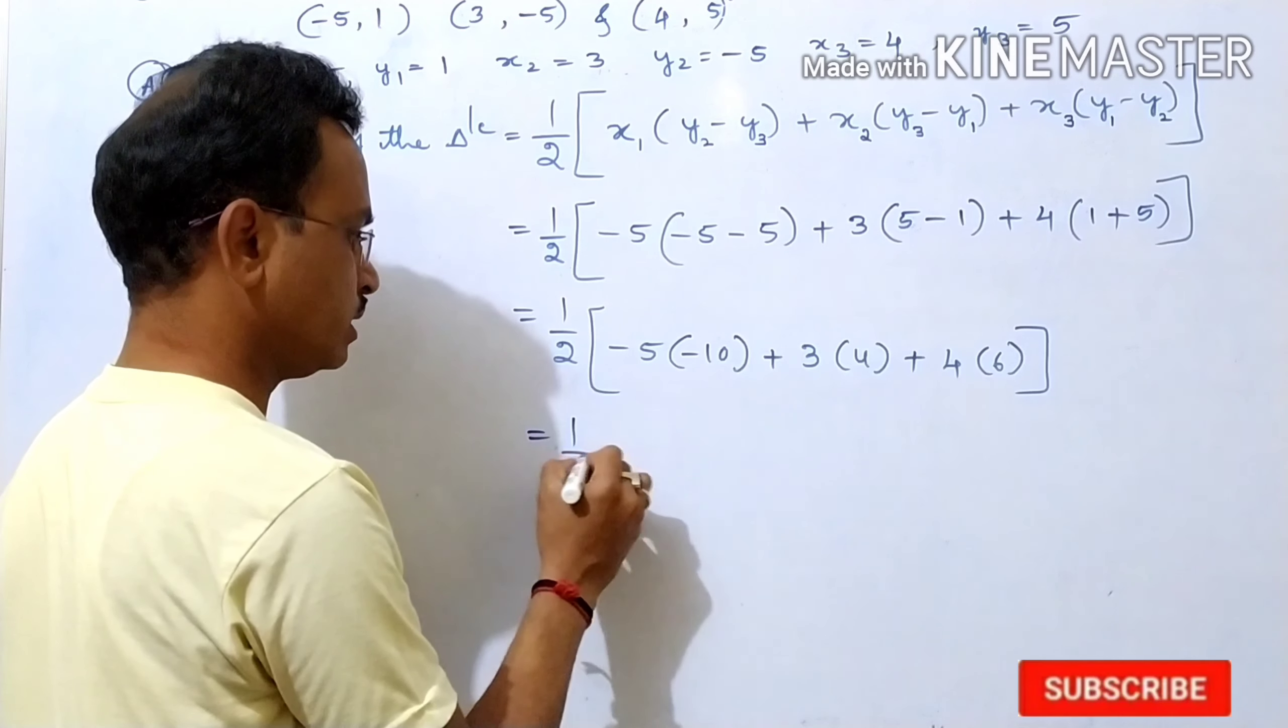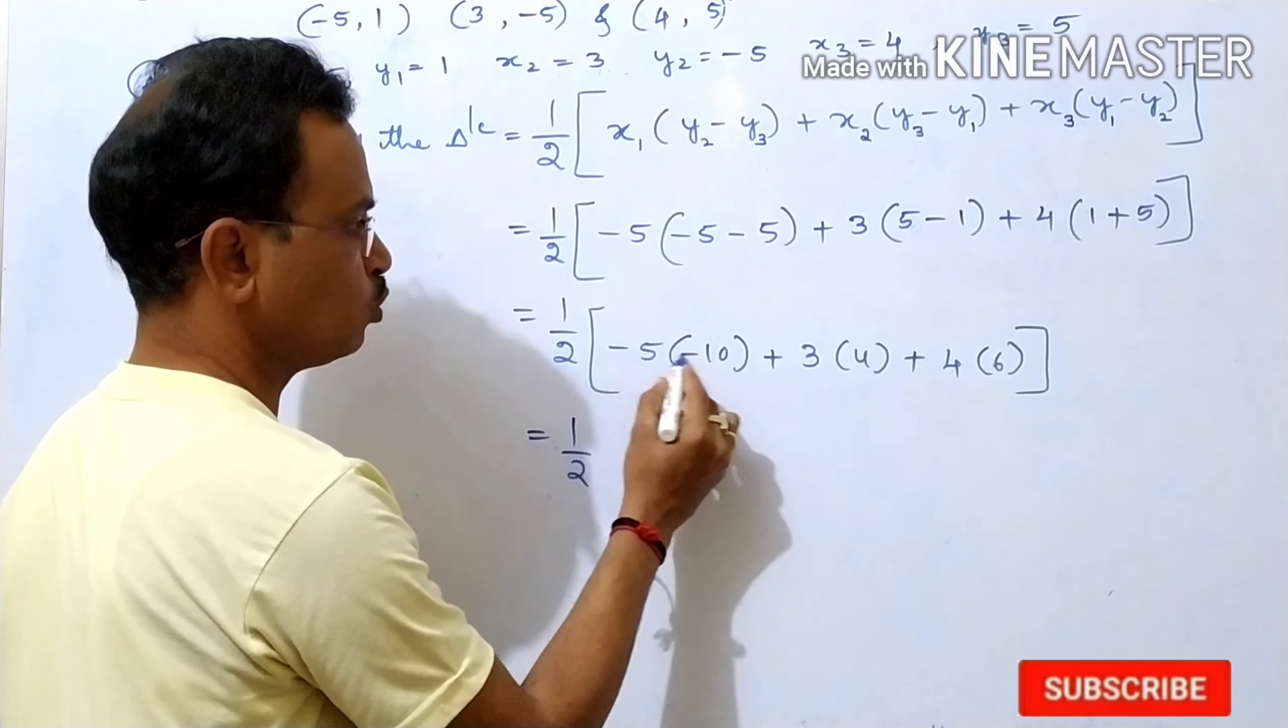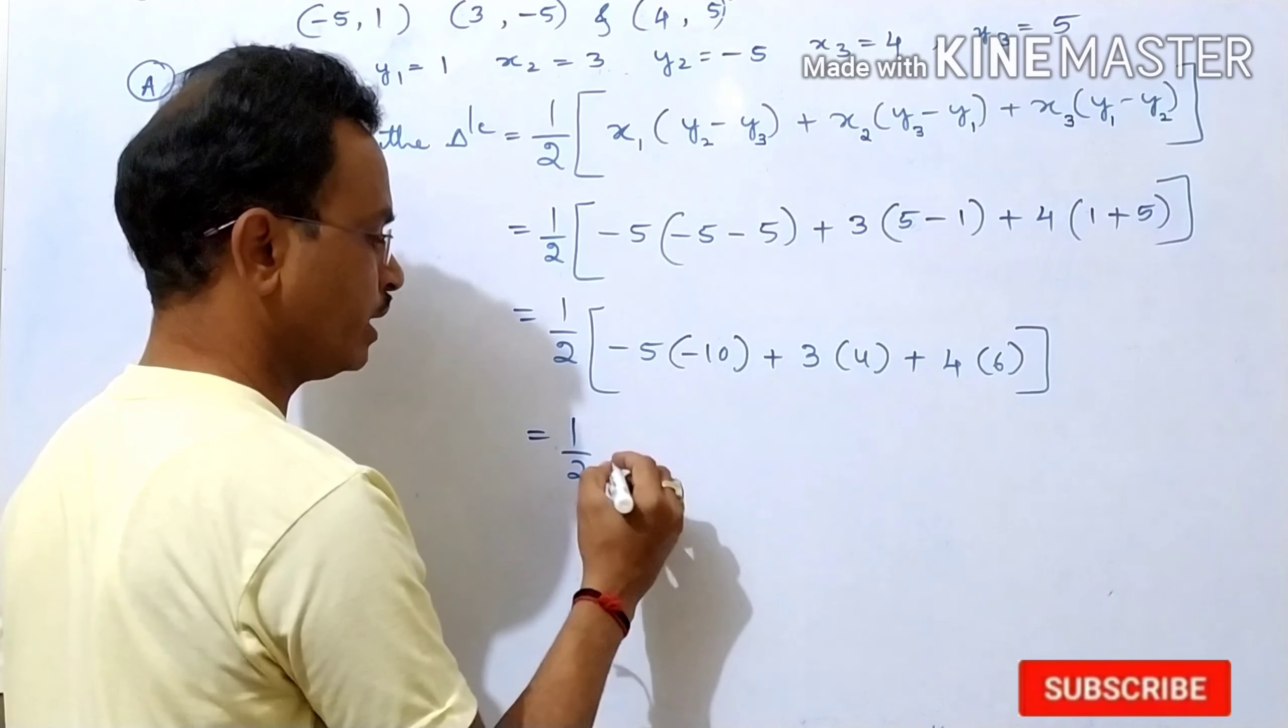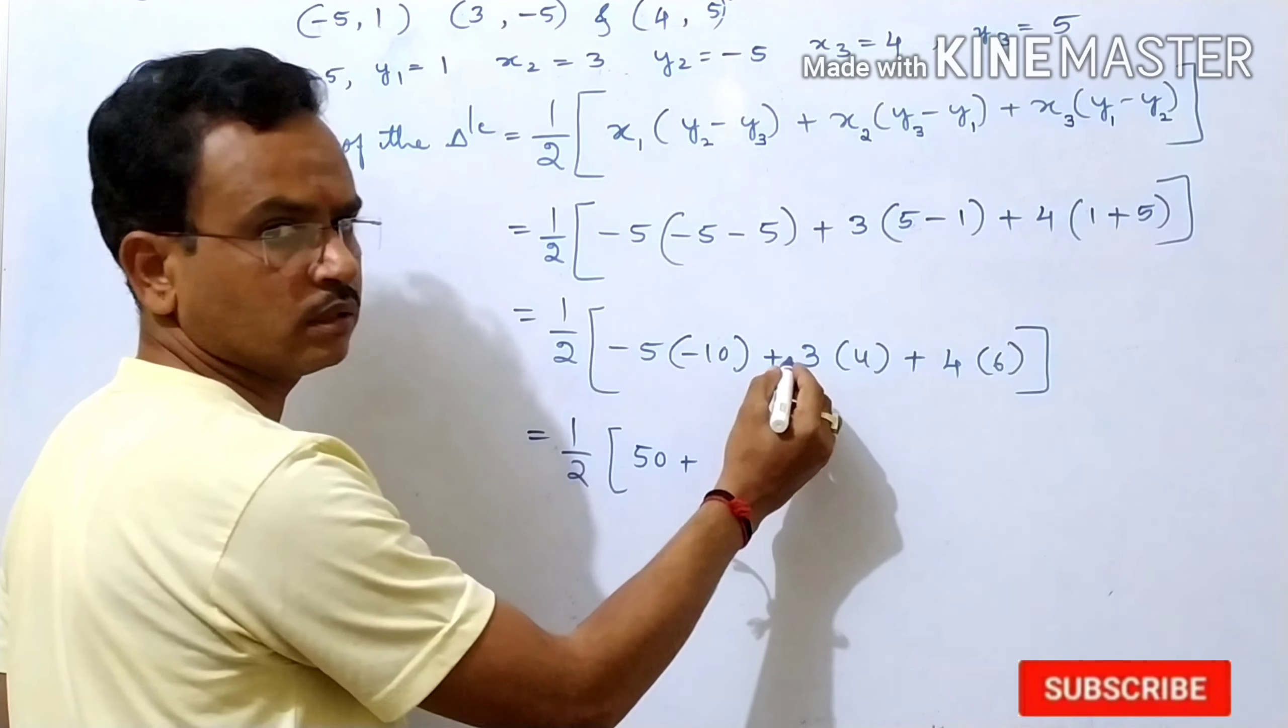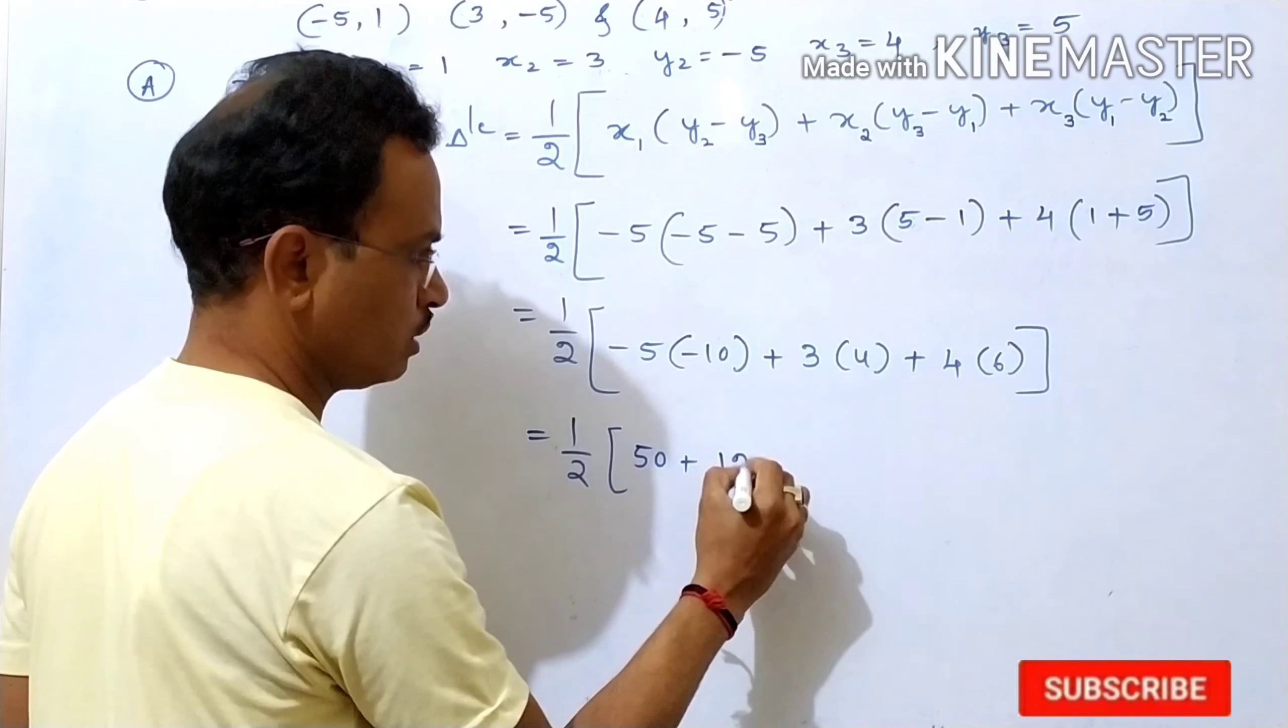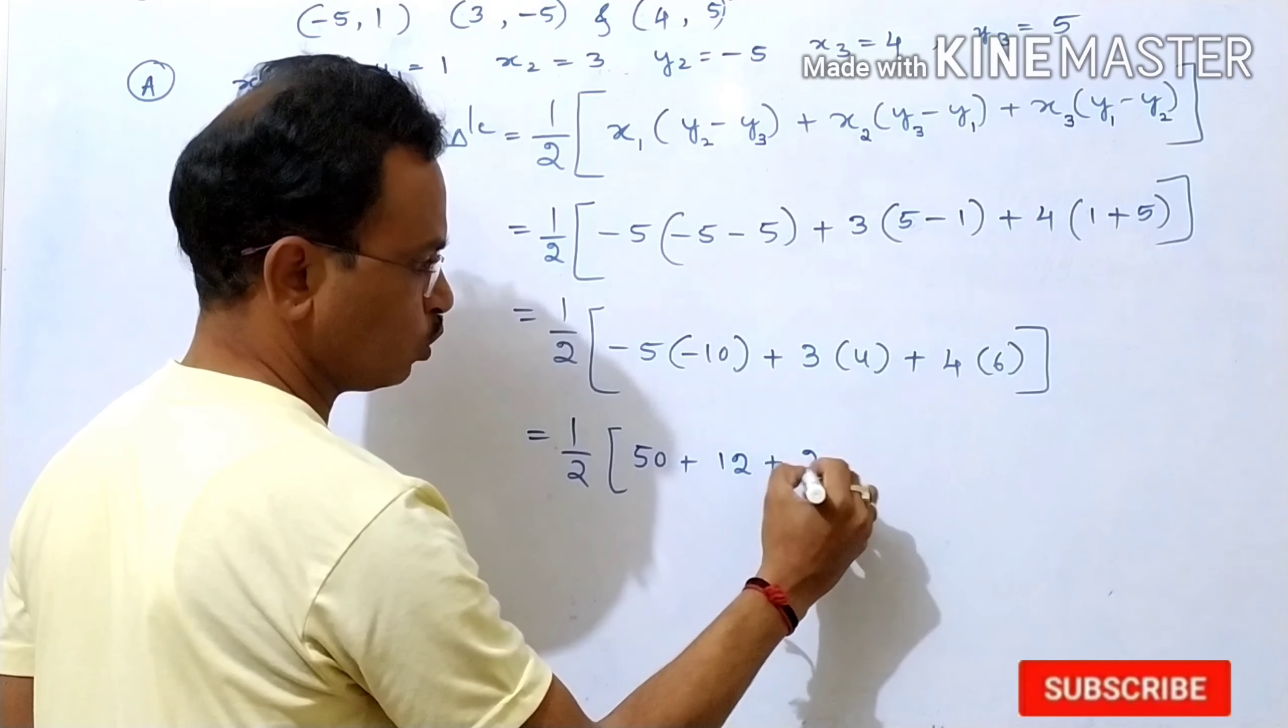Plus 4 into 1 plus 5 is 6. Then 1 by 2 as it is. Again this you multiply minus into minus plus, 5 times is 50, plus 3 4's is 12, plus 4 6's is 24.